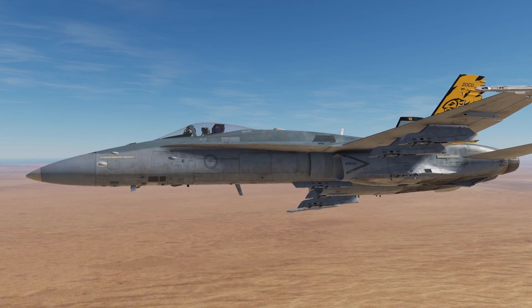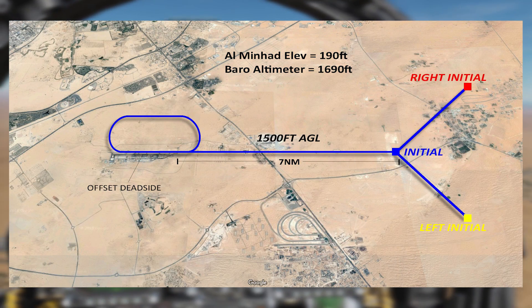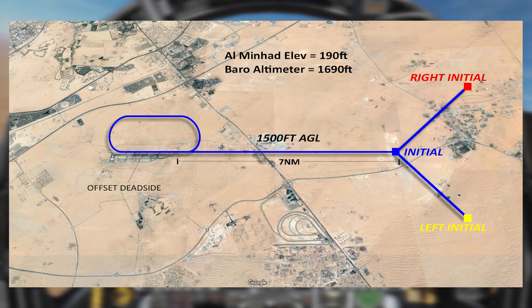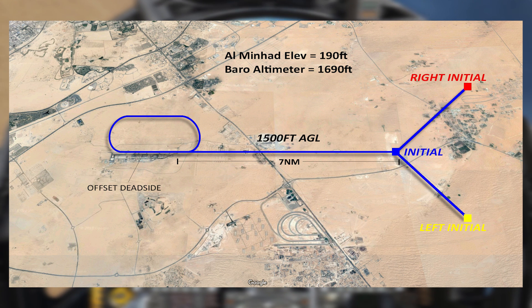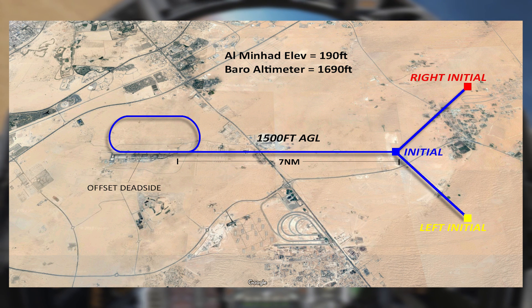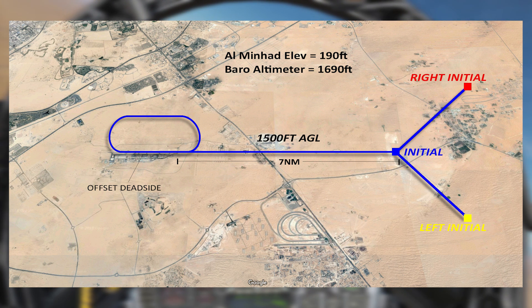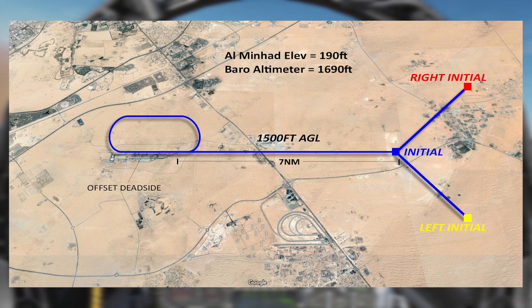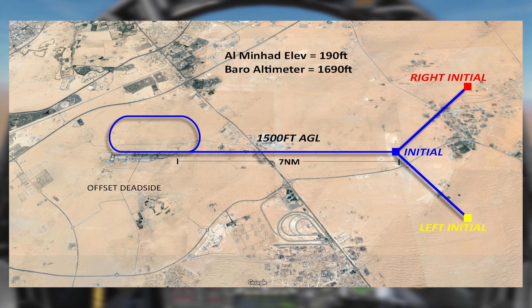Before we get into the jet, let's take a look at the diagram. The initial pitch is a visual procedure which can start at the initial, or from a right or left initial, which is basically a 45-degree intercept onto the final approach course.